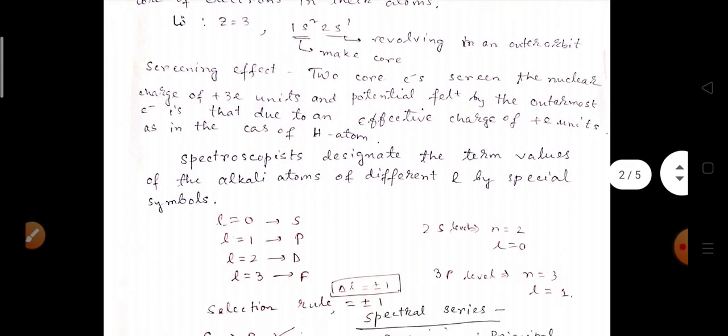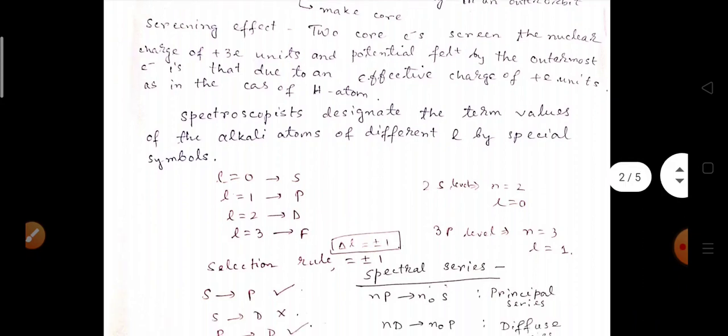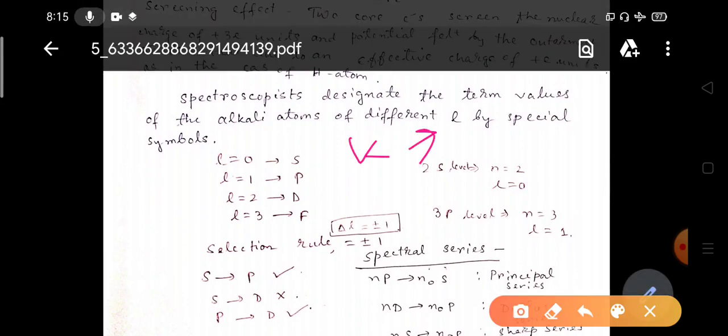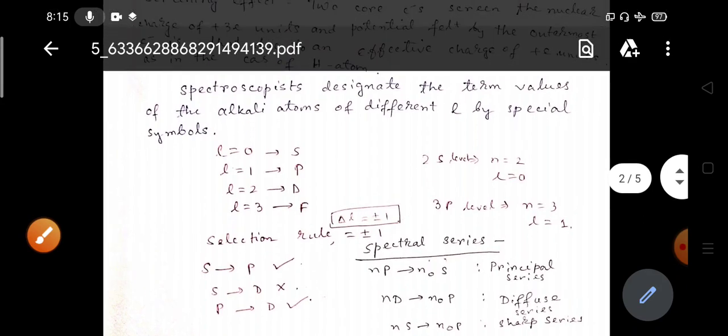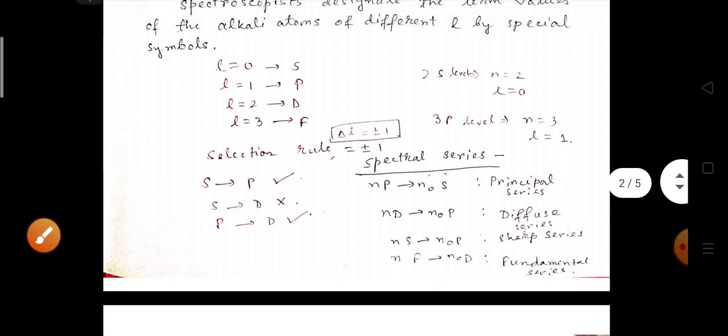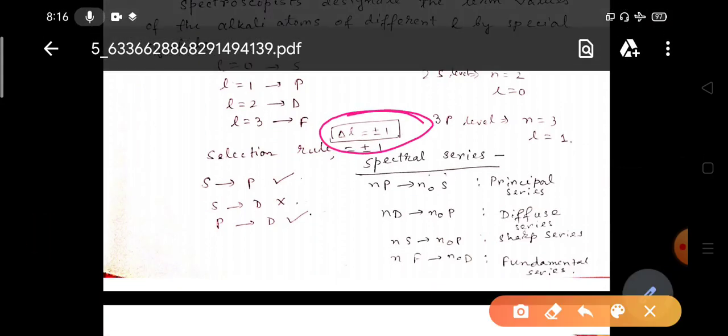Now spectroscopist designed the term values of the alkali atoms from different L values. Earlier we discussed that the Sommerfeld model, he considered there are two quantization, one is for the orbital consideration, another is for azimuthal consideration or we can write it as N and L. Spectroscopic denote the term as L equals to 0 is S, L equals to 1 is P, L equals to 2 is D, L equals to 3 is F. The selection rule is delta L equals to plus minus 1.